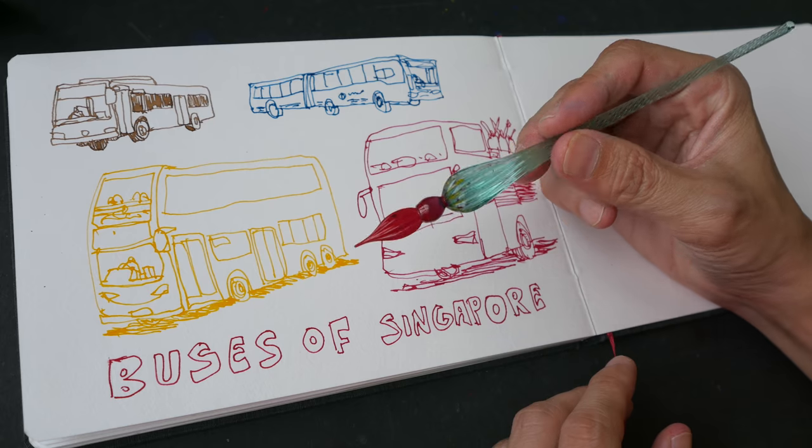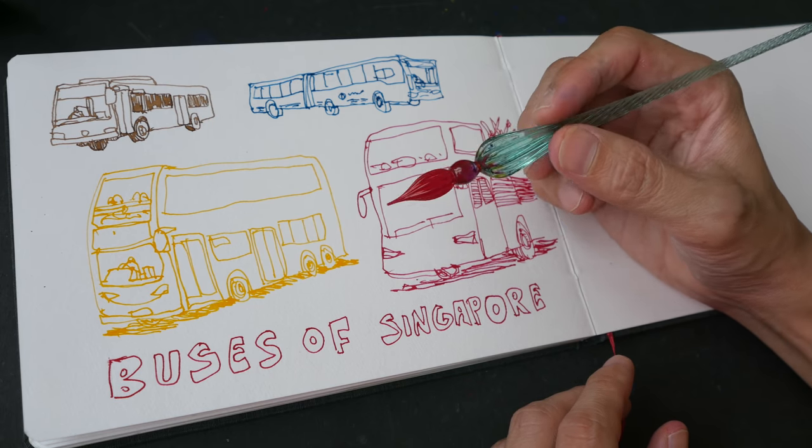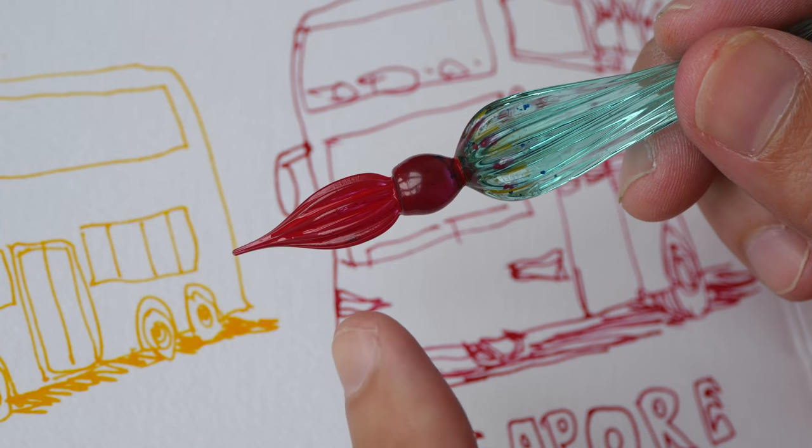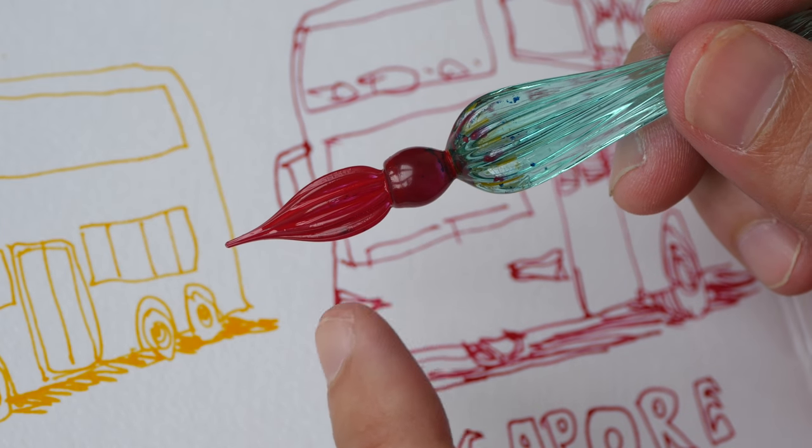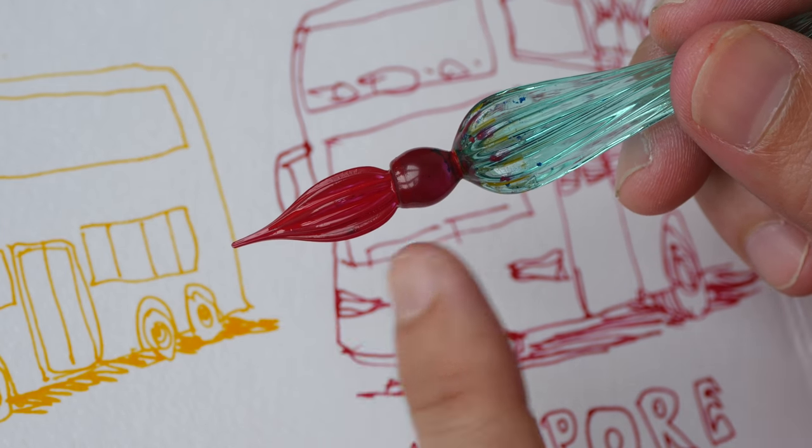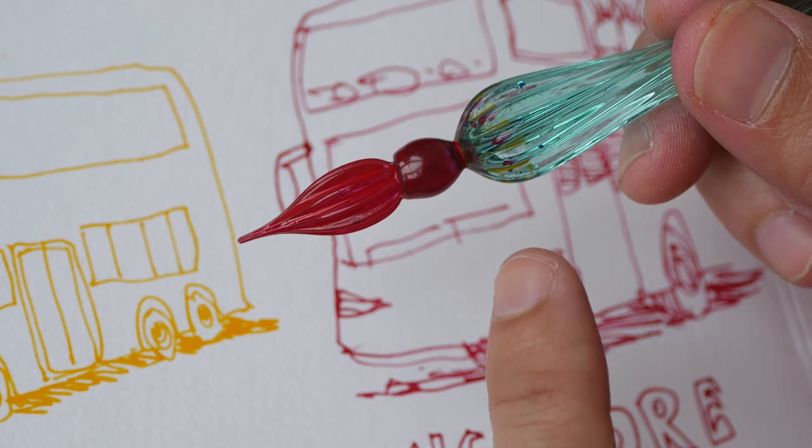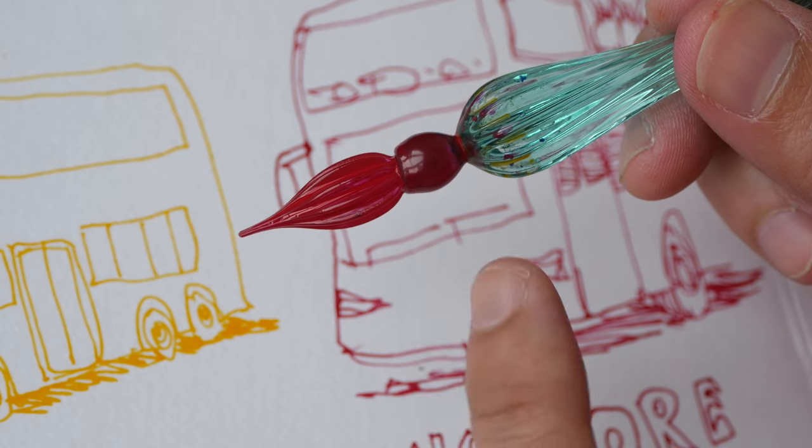And another thing I like about this pen is, because this is glass, the tip, the nib here, will not rust. It's easier to clean as well compared to those metal zebra nibs.